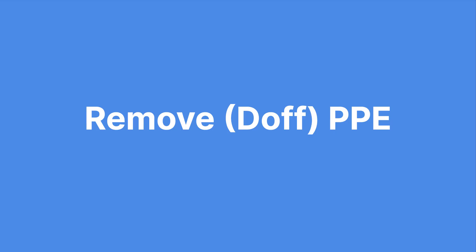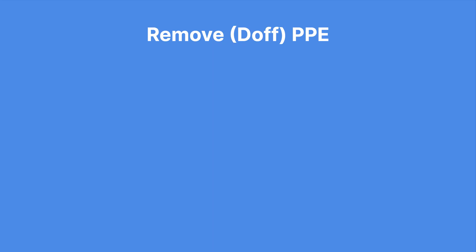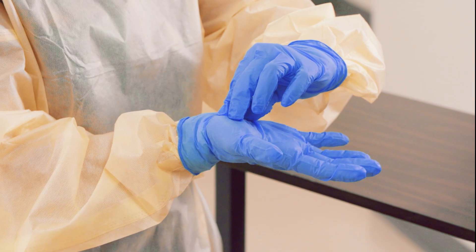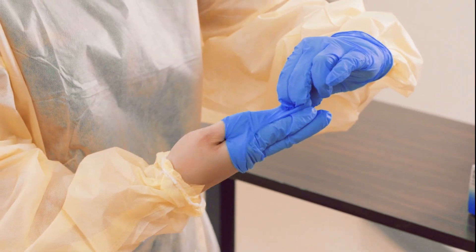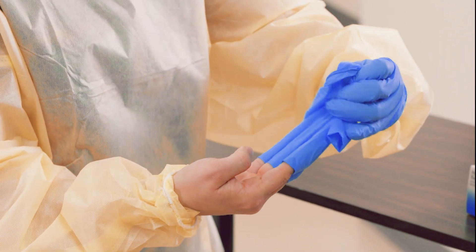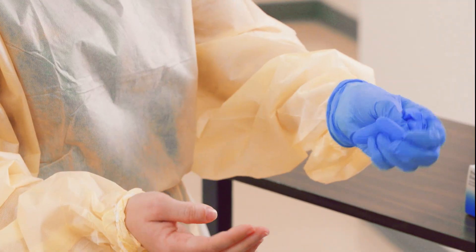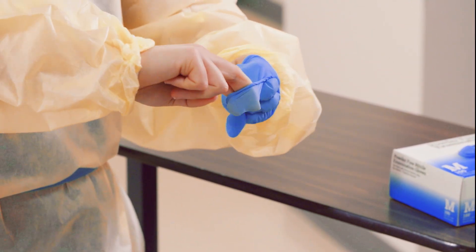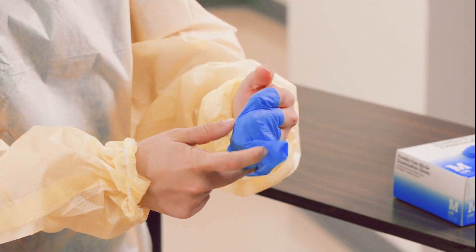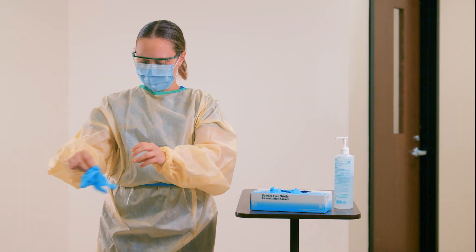When doffing or removing PPE, you should follow this procedure. Step 1: Remove gloves. Removing gloves properly prevents the contamination of your hands as well as the spread of infectious agents. Using a gloved hand, pinch the outside of the palm area of the other glove. Peel it off and hold it in the other gloved hand. Slide the fingers of the ungloved hand under the remaining glove at the wrist and peel it off so that it goes over the first glove. This technique contains the contaminated portions of the gloves within each other, minimizing the risk of contamination. Discard the gloves in a waste container.